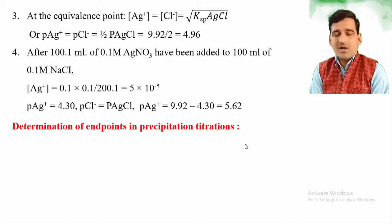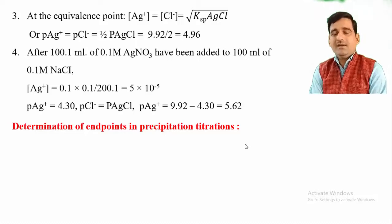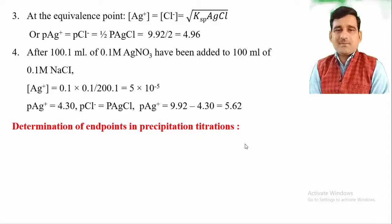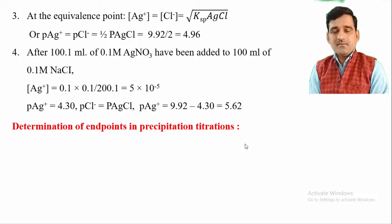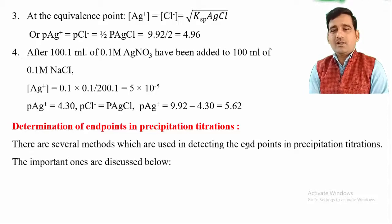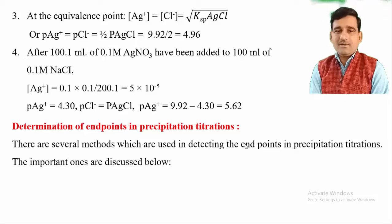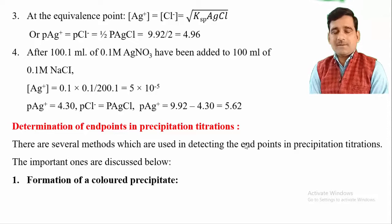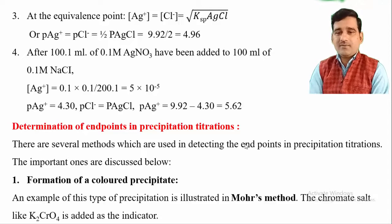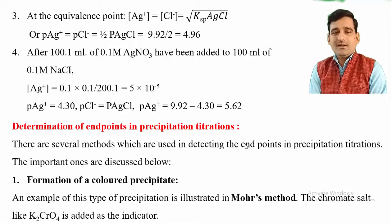These calculations are used to study how to determine the equivalence point in precipitation titration. For determination of the end point in precipitation titration, an indicator is required — similar to acid-base, complexometric, and redox titrations. Several methods are used; one is the formation of a colored precipitate. An example is the Mohr's method, where a chromate salt such as potassium chromate is added as an indicator.